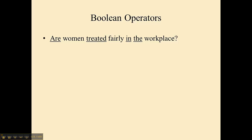Our example, remember, is: are women treated fairly in the workplace? We said that this was an example of natural language, and the problem with searching for something just like this in the databases is that the computer is going to take you seriously. Whatever you type in, it's going to search for. So in addition to all of the essential words like women, workplace, and fair, it's also going to search for all of these unessential words like are and treated. I don't want that — I just want my keywords, but now I have to tell the computer what to do with them.